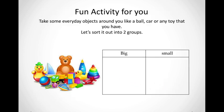Well done. Now here's something fun for you to try at home. Take some toys that you have or any objects that you find around the house and sort them into two groups. Maybe you can sort into toys that are big and toys that are small, or maybe into things that are yellow and things that are not yellow. You can be creative and be sure to send your teacher a picture. We've come to the end of the lesson today. I hope you all enjoyed it. See you tomorrow. Assalamualaikum.